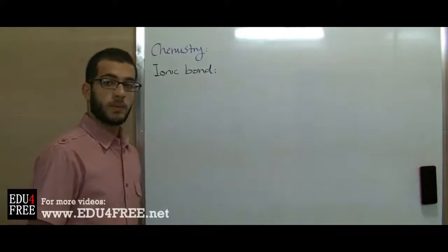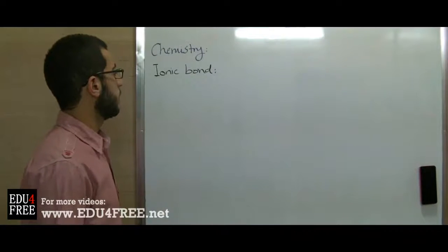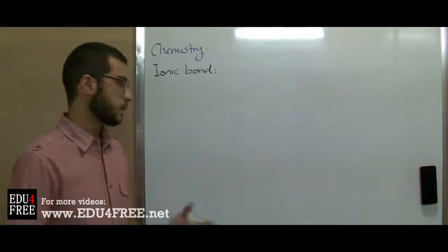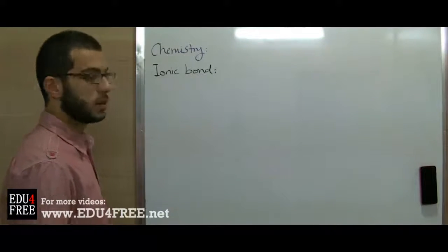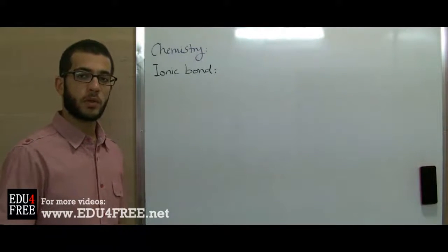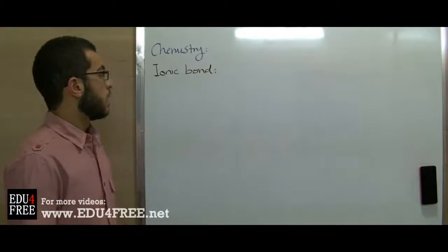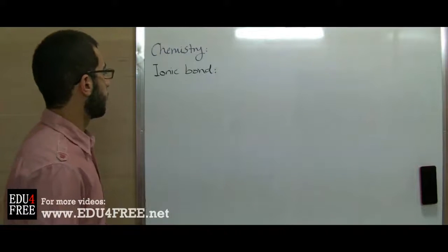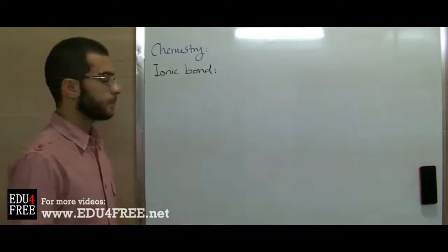Today we will begin chapter 3 in chemistry, which talks about chemical combinations. So basically we will be talking about the bonds that occur between atoms in order to form different compounds. We will begin with our first type of bond, which is the ionic bond.